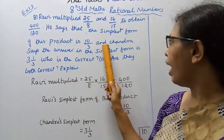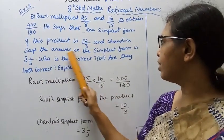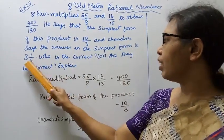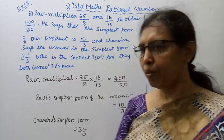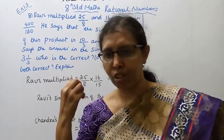is 10 by 3, and Chandru says the answer in the simplest form is 3 1 by 3. Who is correct? Are they both correct? Explain.